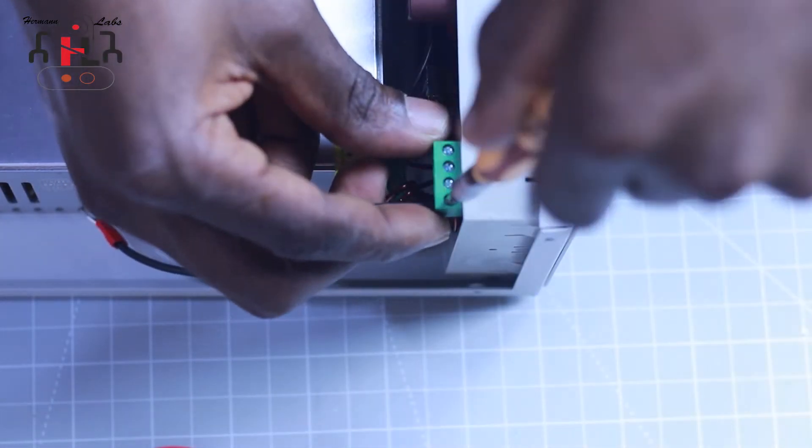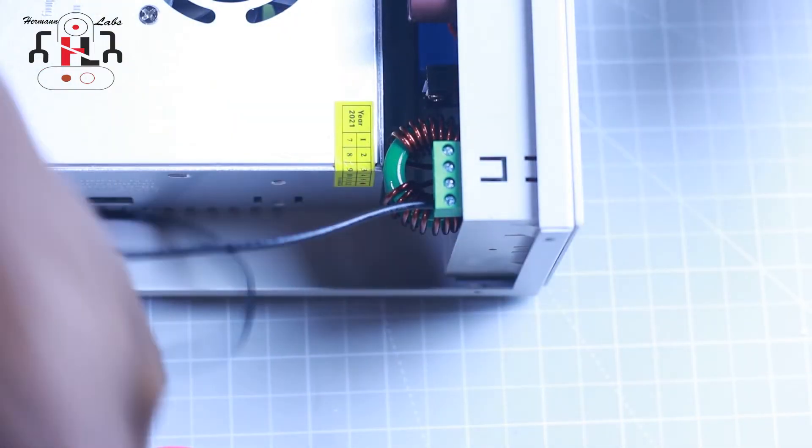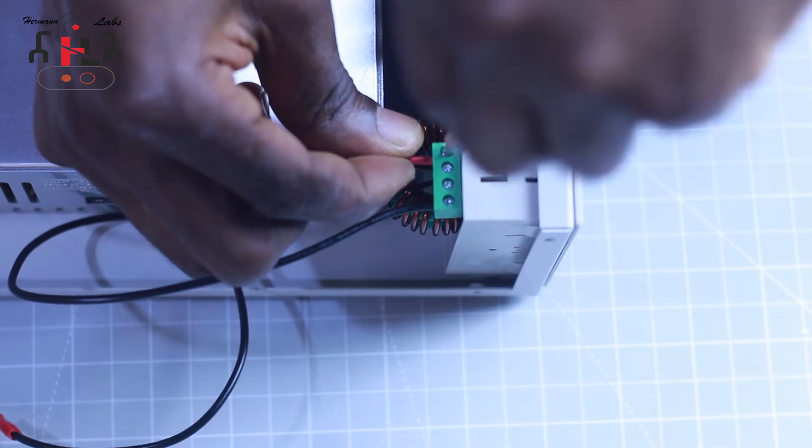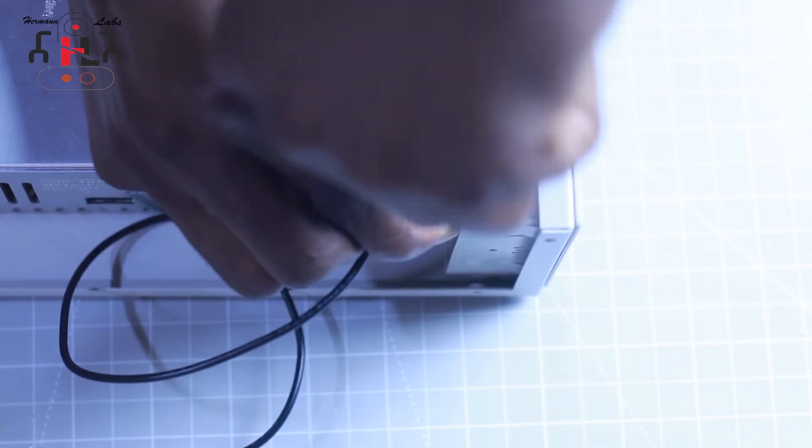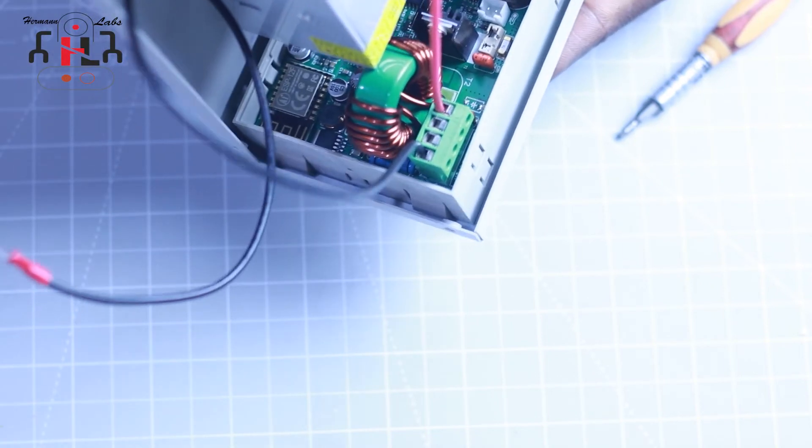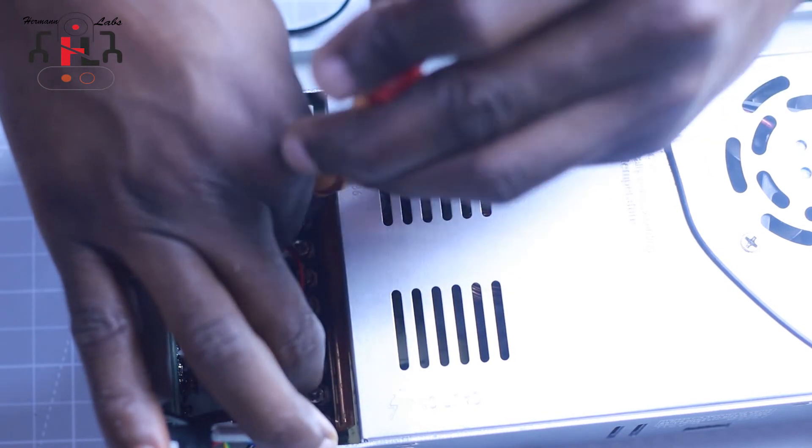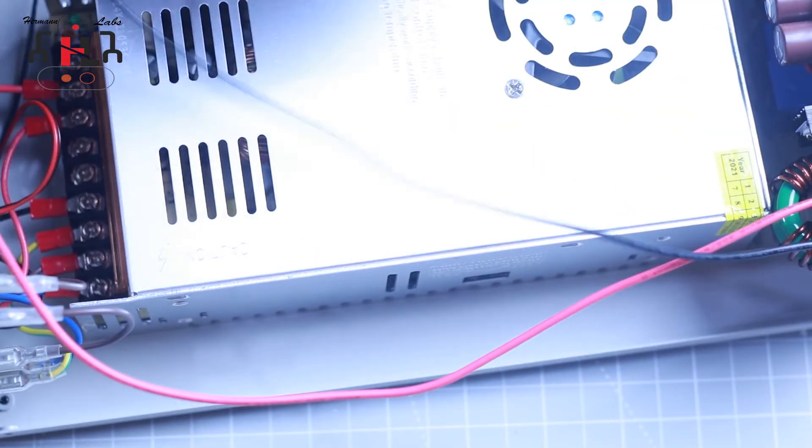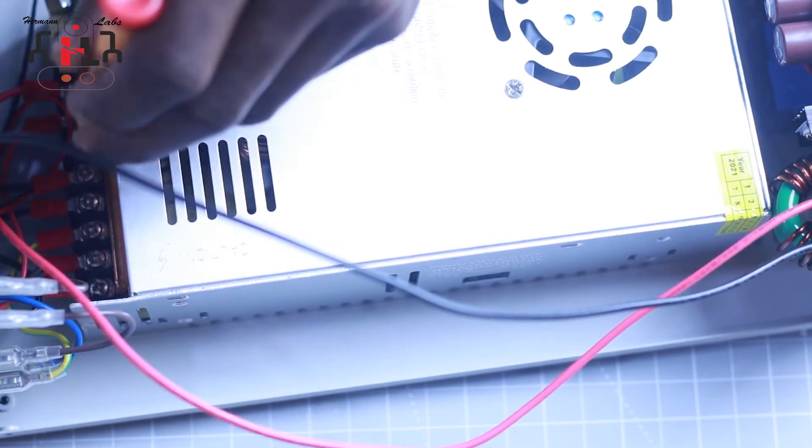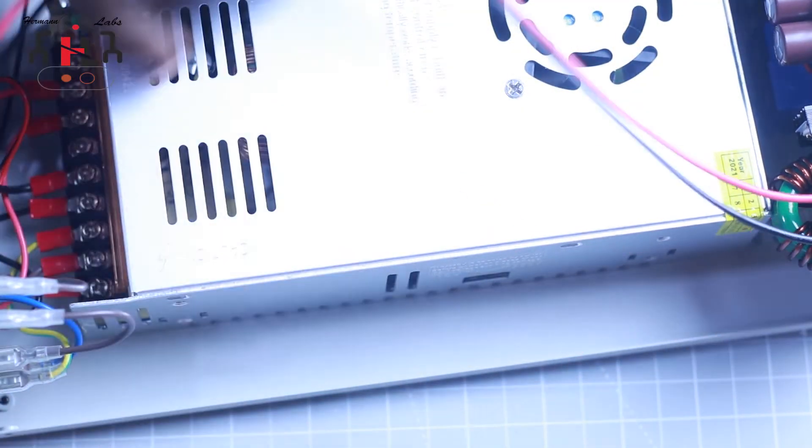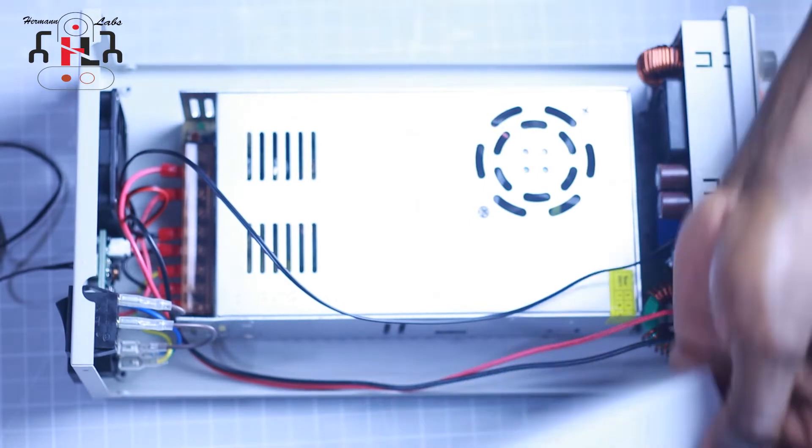Now we have to connect the power supply to the control module. This process is very straightforward. However, we need to make sure to respect the polarities. If not, we are going to kill the power supply controller. Now we connect the battery thermistor and then we close the case.